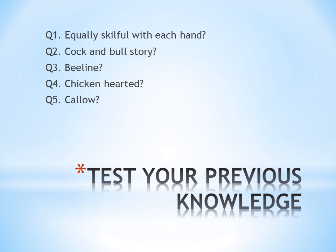Question one: equally skillful with each hand — the answer is ambidextrous. Question two: cock and bull story — meaning a self-made or fabricated story. Question three: beeline — meaning a direct route, like bees flying in a straight line. Question four: chicken-hearted — meaning cowardly in nature. Question five: callow — meaning a person with very little or minimal experience. Please tell me in the comments how many you got correct and how many wrong.